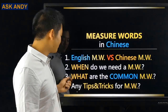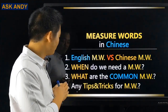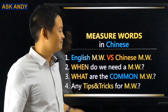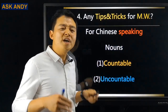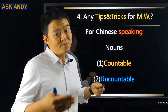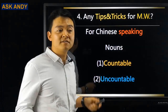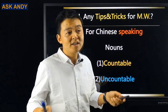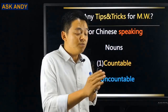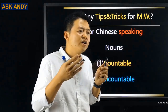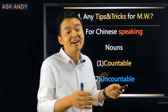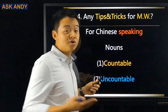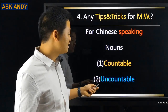Question number four: any tips and tricks for measure words? We have so many measure words for different nouns in Chinese — how do you remember that much? My trick is just for speaking. When you're speaking, having to think about the right measure word slows you down. So categorize nouns into two groups: countable nouns and uncountable nouns.